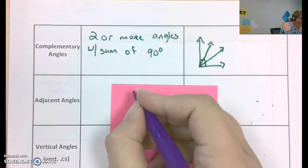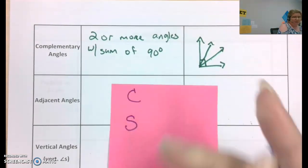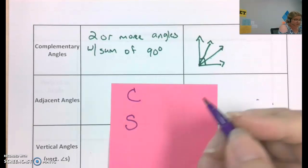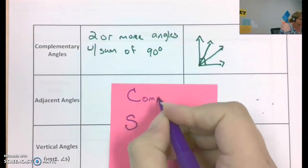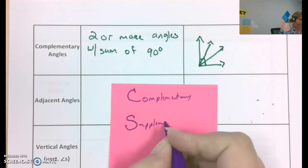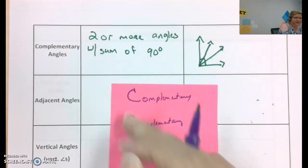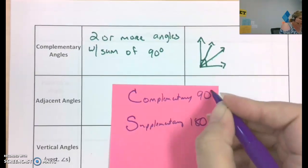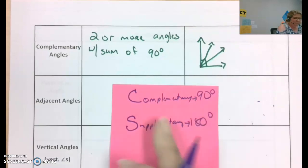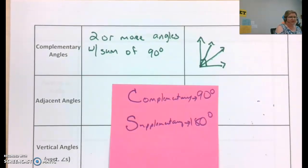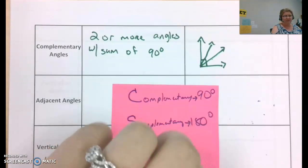So this is how I remember. This still happens in my brain. This is just a memory device. It's not a math thing, per se, but complementary and supplementary. All right? C comes before S in the alphabet, and 90 comes before 180. So that helps me remember that complementary is 90 degree angles. Supplementary is 180 degree angles. You can take that or leave it.